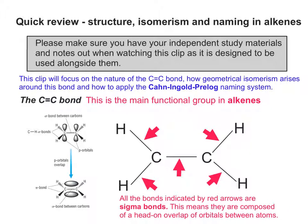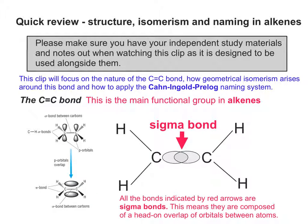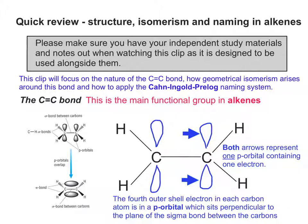Sigma bonds are composed of a head-on overlap of orbitals between the atoms. I've changed one of the bonds between the carbon atoms into an overlap of orbitals just to illustrate this — the orbital overlap in the middle is the sigma bond. Taking the fourth outer-shell electron in each carbon atom — because each carbon already has three bonds — this fourth electron is in a p-orbital, which sits perpendicular to the plane of the sigma bond. Both blue arrows represent one p-orbital containing one electron; remember, a p-orbital has a figure-of-eight shape.